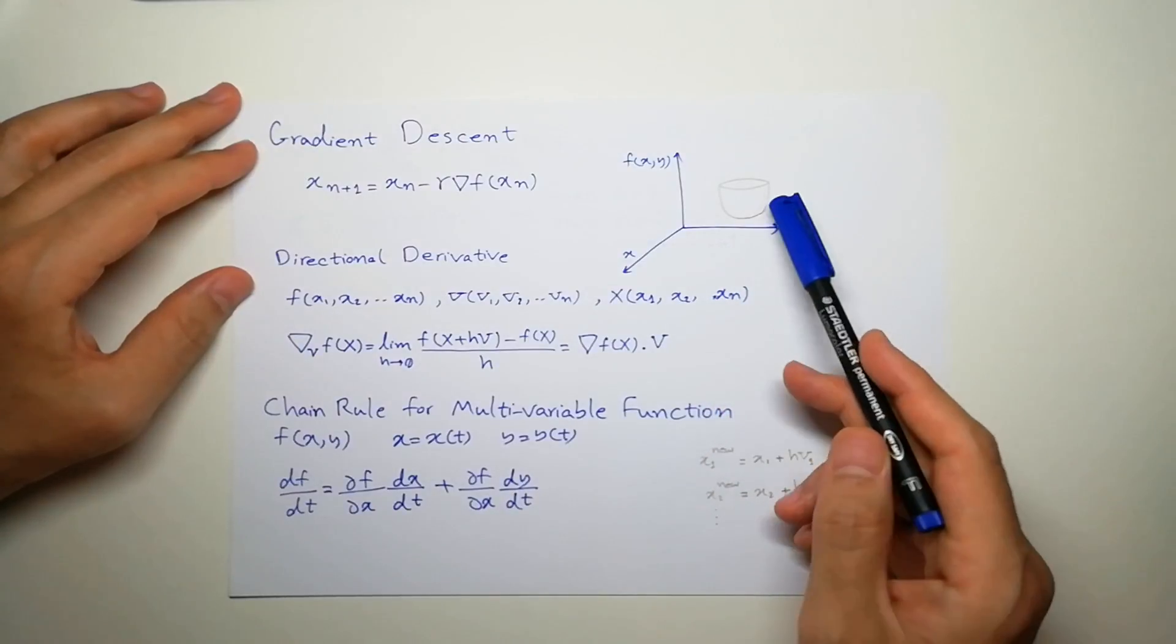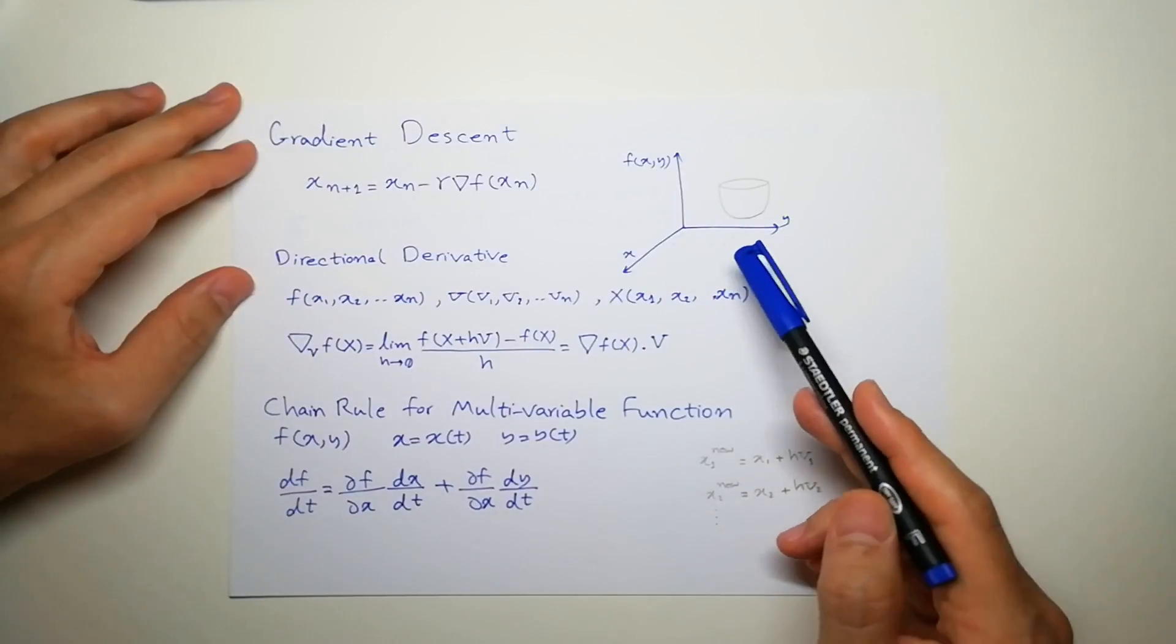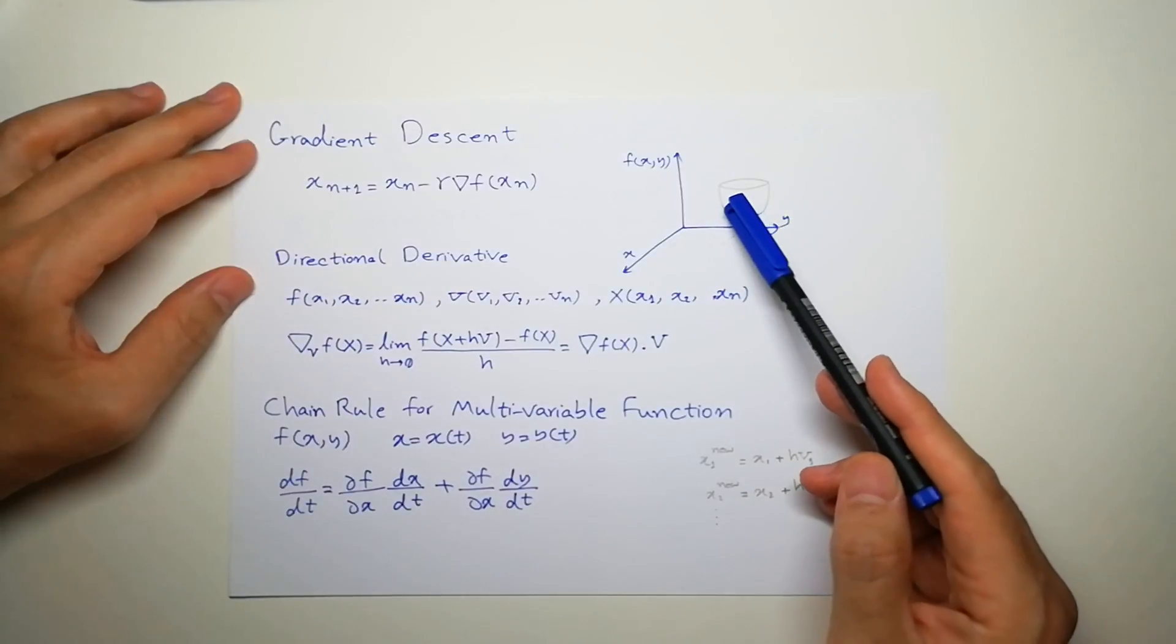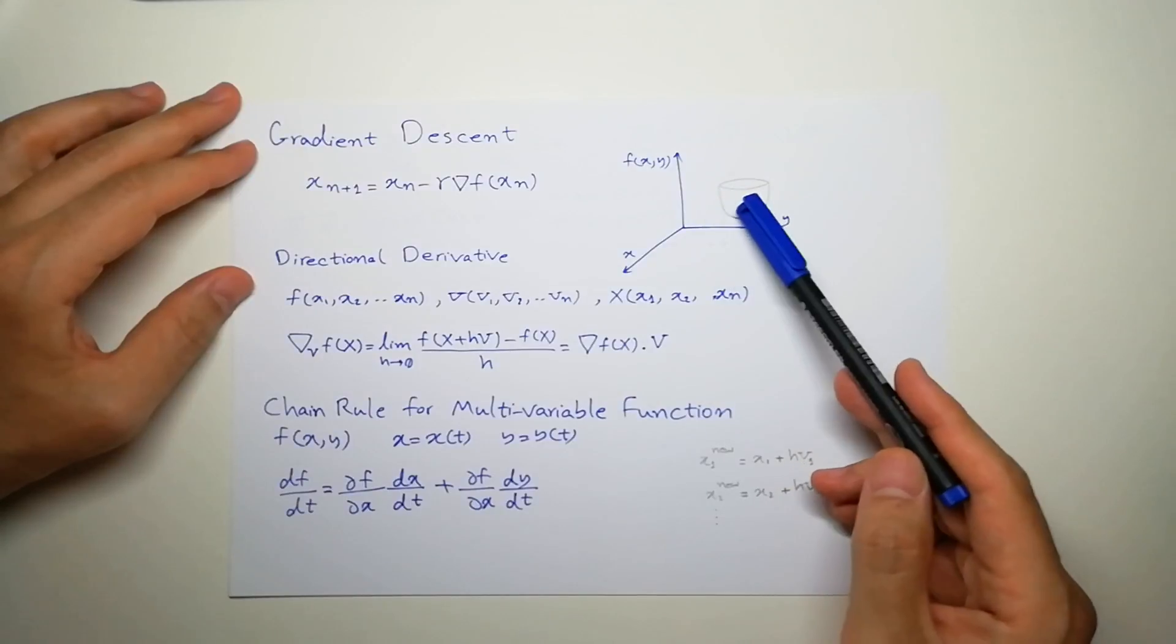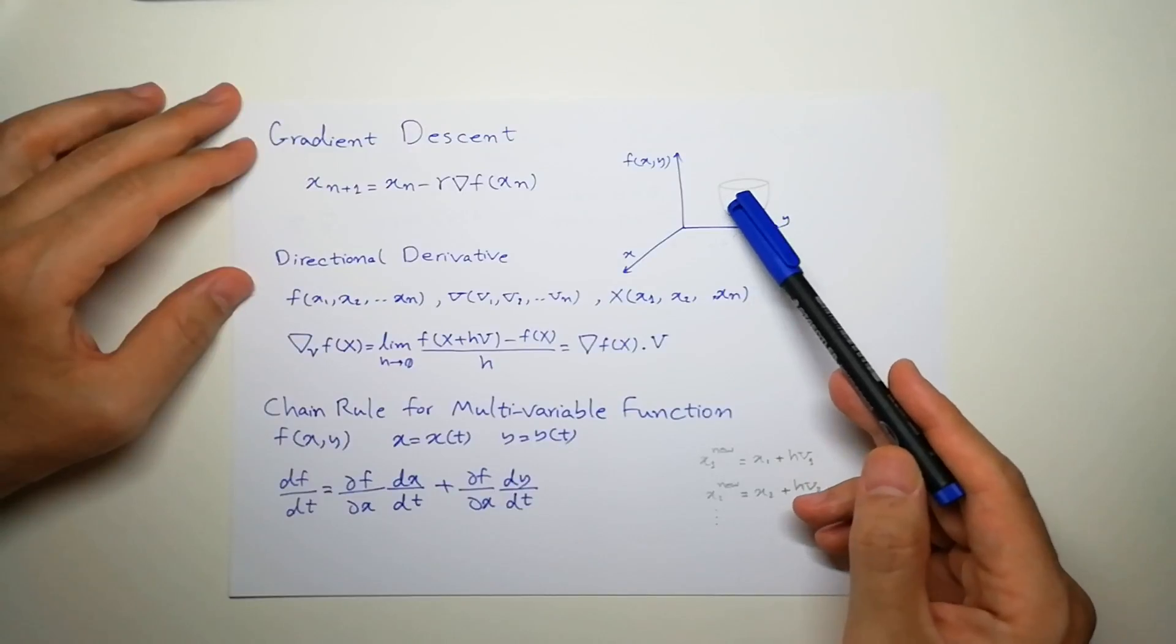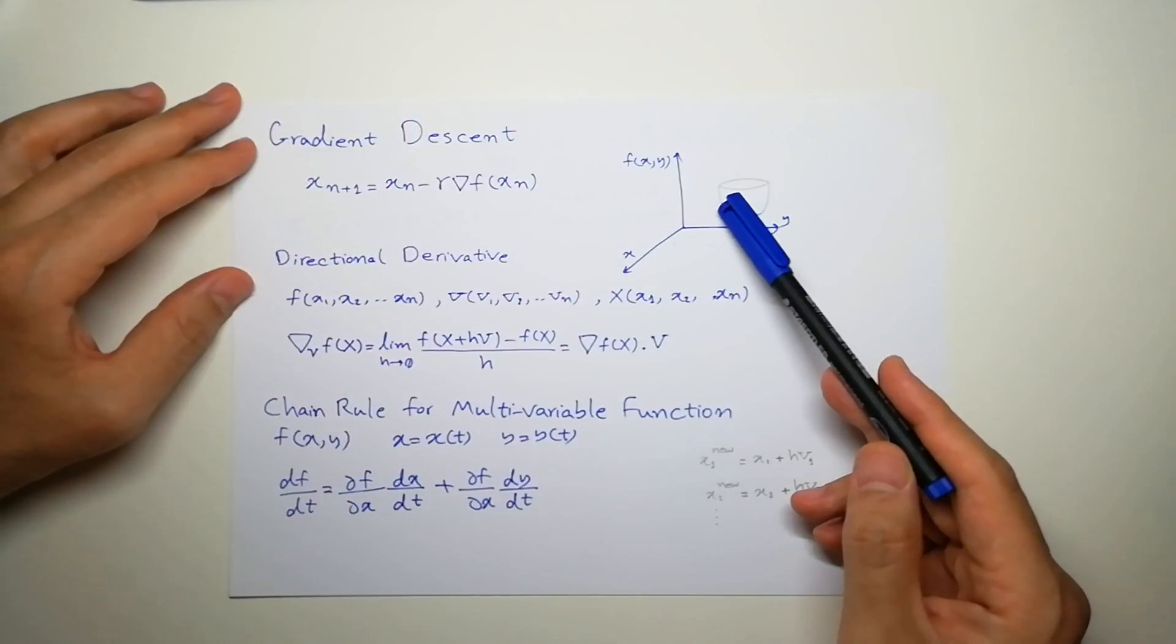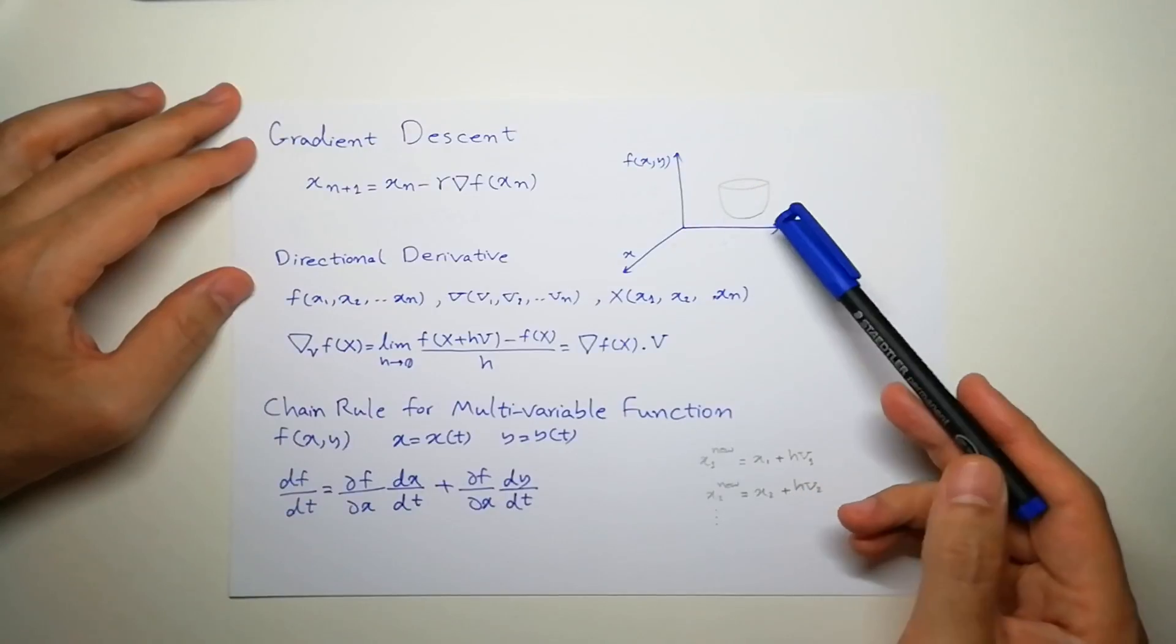Let's say you have a function which has a shape like this, and you're at this point. You can traverse in different directions: you can go up, left, right. We're looking for the direction that gives us or guides us to the minimum point, which is here.